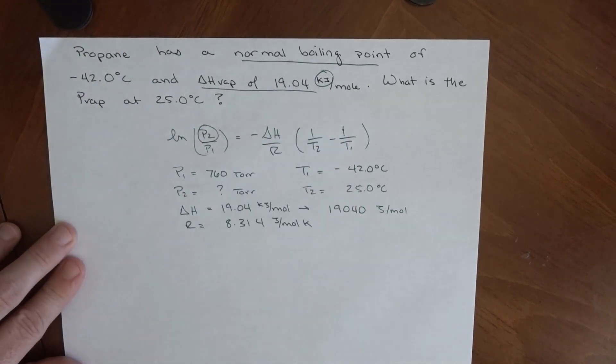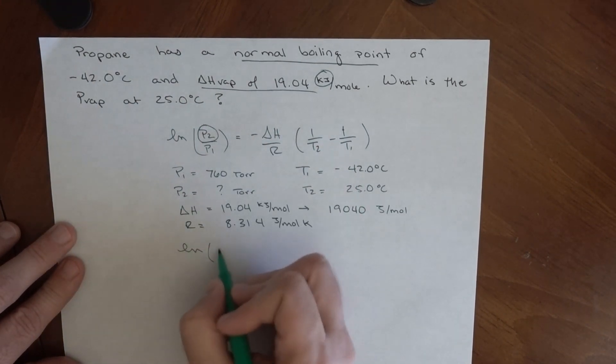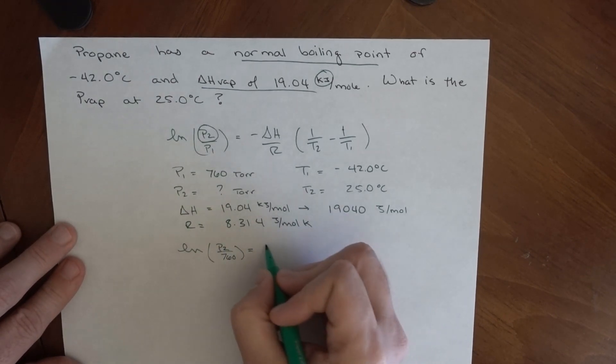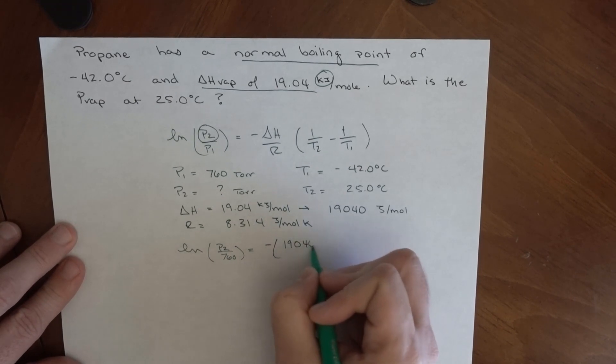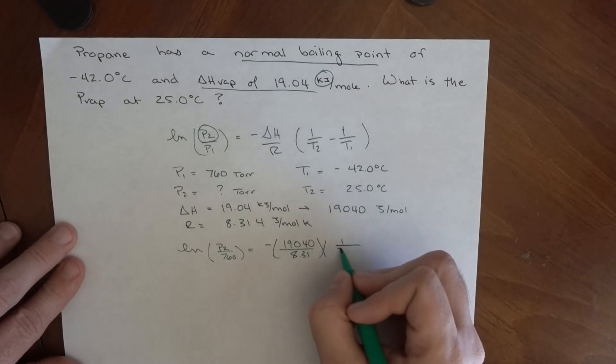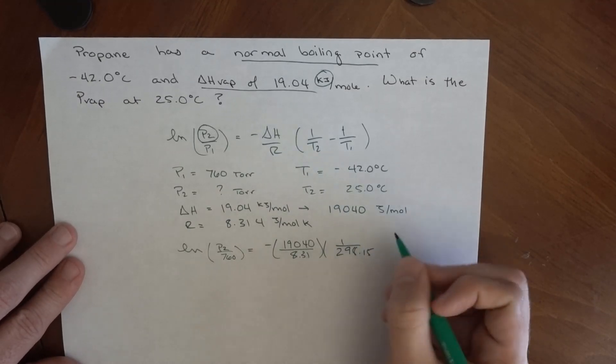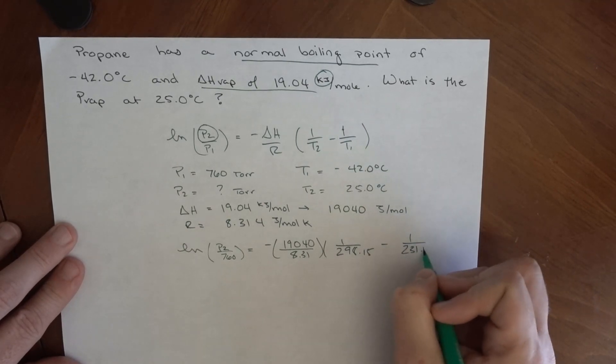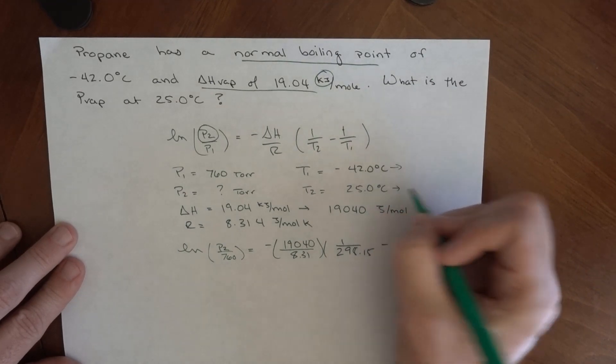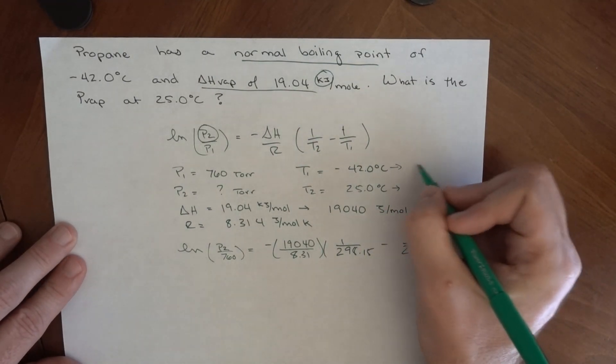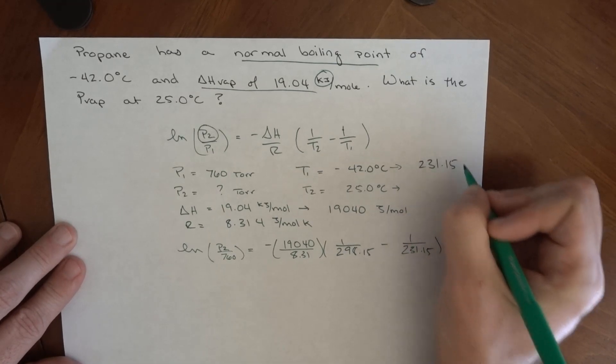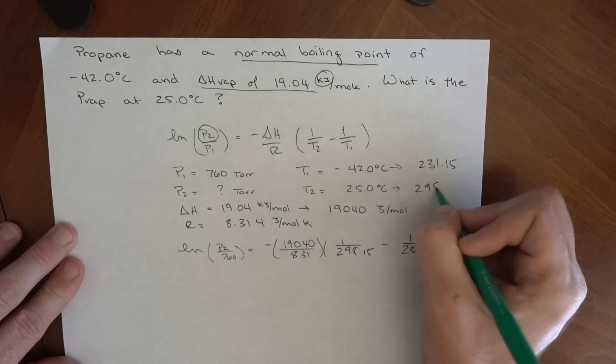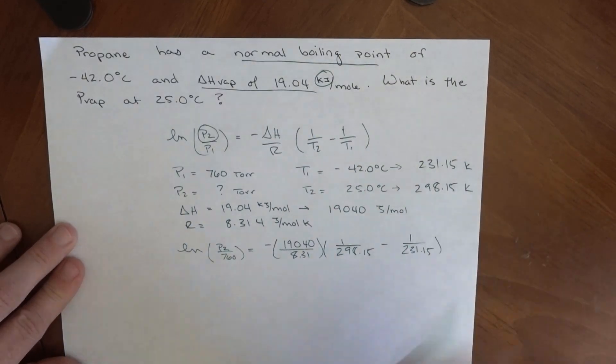So ln(P2/760) = -19,040/8.314 × (1/298.15 - 1/231.15). Just to be clear, these temperatures really do need to be in Kelvin if we're going to use this expression. So this temperature in Kelvin is 231.15, and this is 298.15, both in Kelvin.